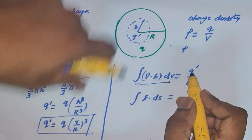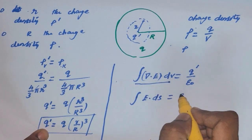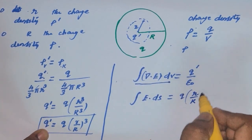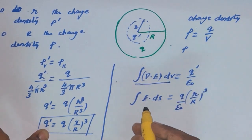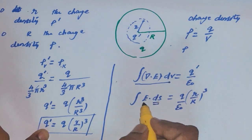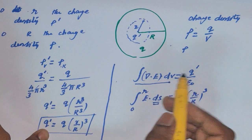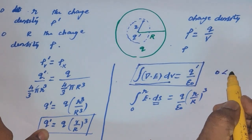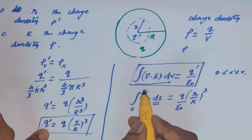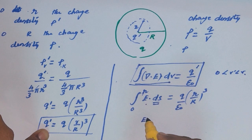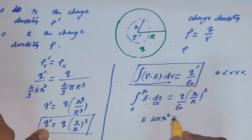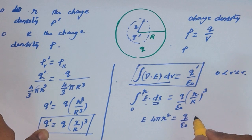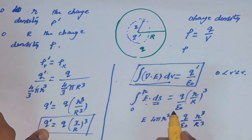That equals q prime divided by epsilon, and we already derived q prime = Q × (r/R)³ divided by epsilon. The surface area up to sphere of radius small r — since the electric field is constant, we take it outside the integral. Integrating the surface area gives 4πr², so: E × 4πr² = Q × r³ / (epsilon × R³).